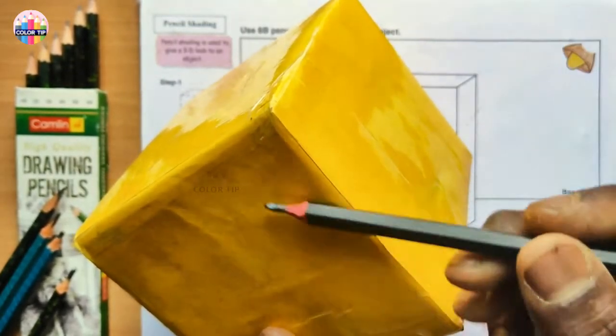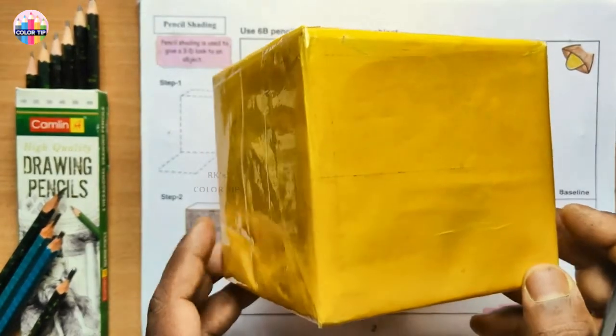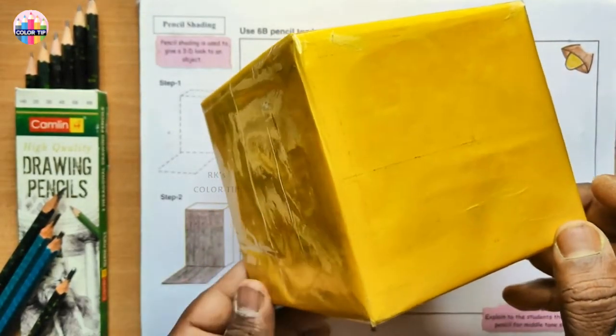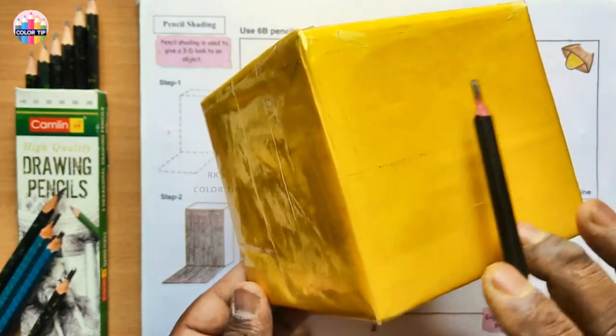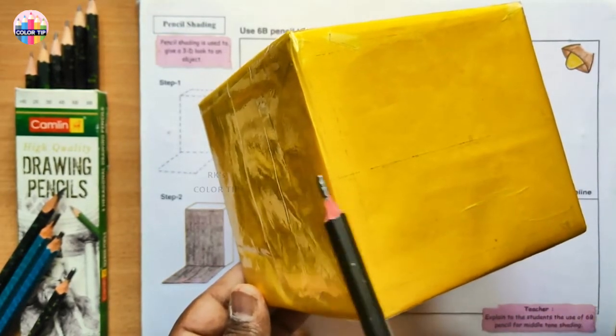If I tilt this side, you can see the slight difference here. This face is completely bright and then this is opposite to the light, so it is dark.